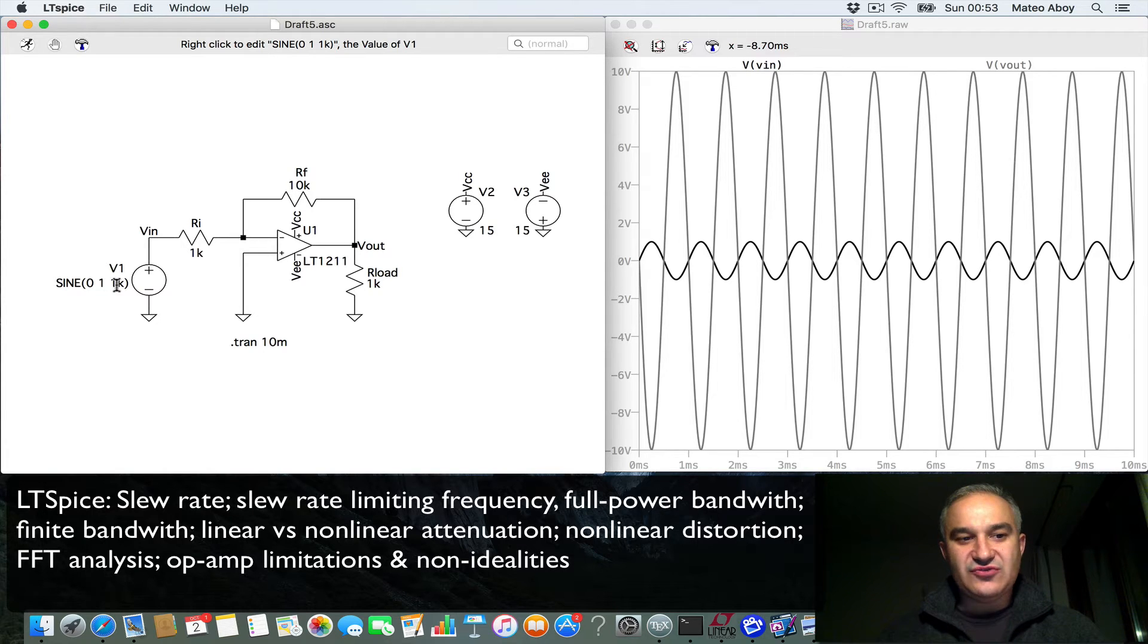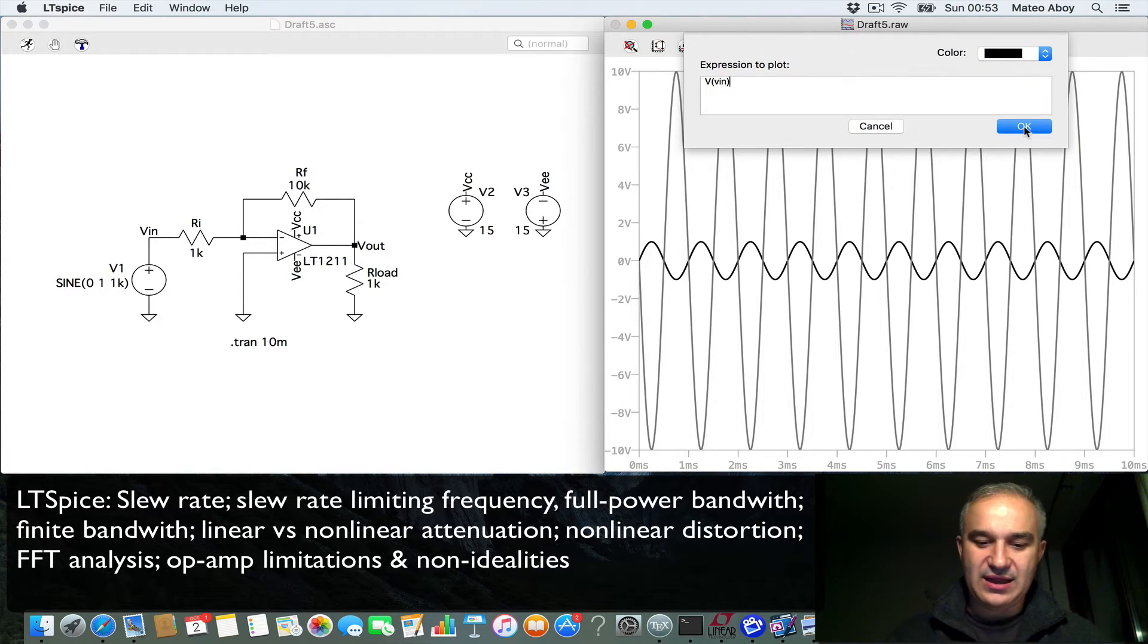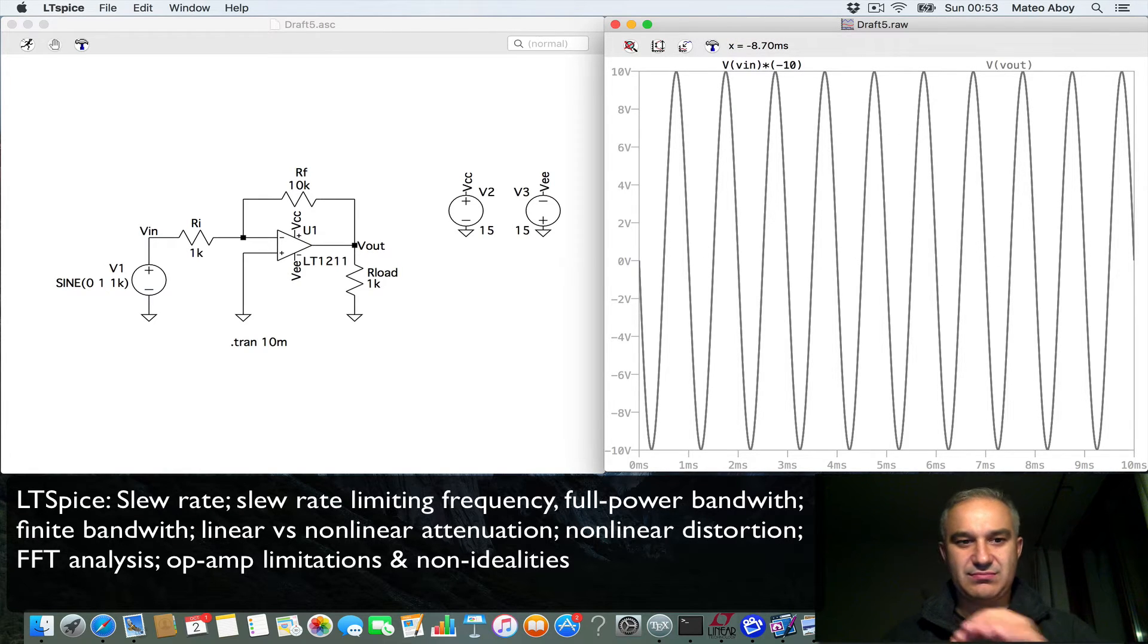By increasing this frequency what we will see is that the output starts becoming more like a triangle wave as opposed to a sinusoidal. So before doing that I'm going to show how you can... I want to make sure that the input and the output match each other so we can see that distortion. And so I'm going to pick at the input, right click, and multiply the input times the ideal amplification in this case, which is minus 10. And we see that the ideal frequency at one kHz is exactly one on top of the other.